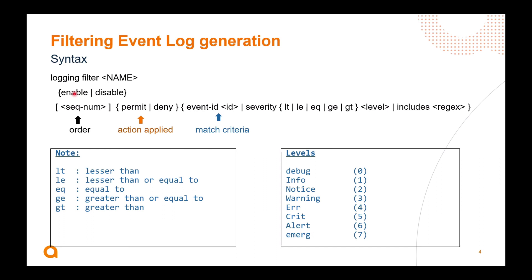We can apply a logging filter to a syslog, and that doesn't prevent us from also applying a logging filter to the event log at the same time. We can do both — but to apply it to the event log, we need this 'enable' keyword. That's a key thing. Then we can have some filters, prefixed by a sequence number.